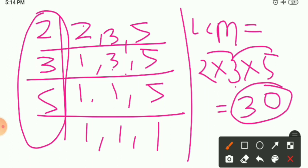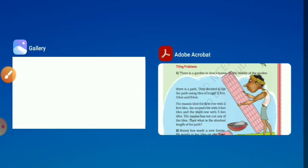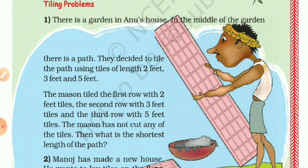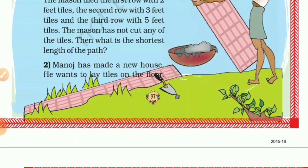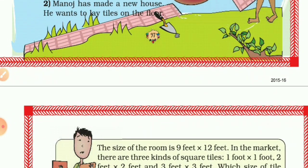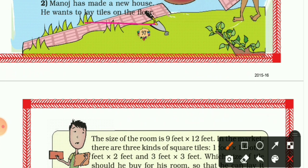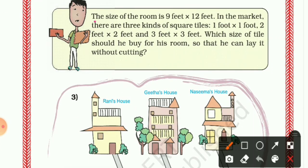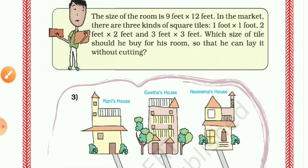So LCM is 2 × 3 × 5 = 30. Therefore, the shortest length of the path is 30 feet. Now come to the second question. Manoj has made a new house and he wants to lay tiles on the floor. The size of the room is 9 by 12 feet. In the market, there are three kinds of square tiles: 1×1 foot, 2×2 feet, and 3×3 feet.